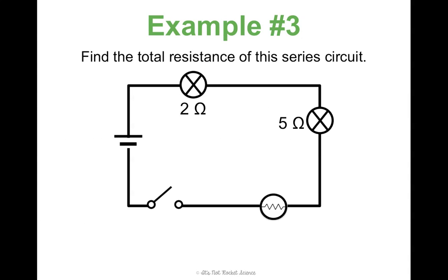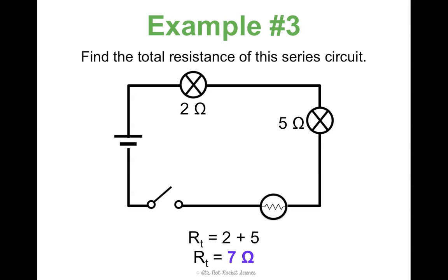Let's start with an easy one — find the total resistance of a series circuit. For series, you just add them up. We've got a light bulb with two ohms of resistance and another with five ohms. Two plus five gives a total resistance of seven ohms. Easy enough.